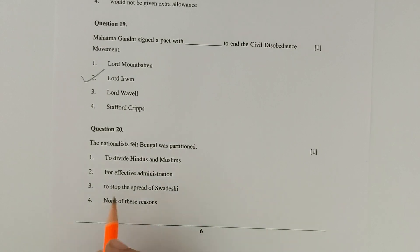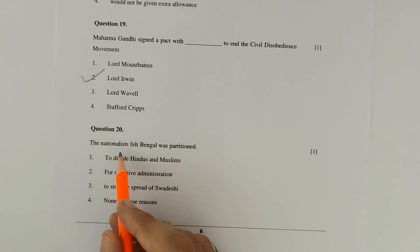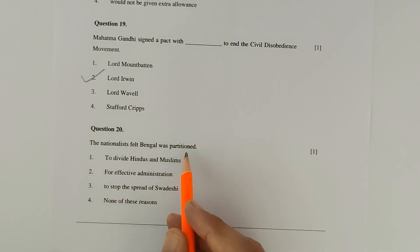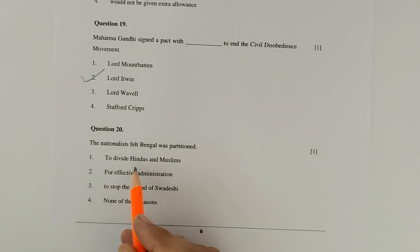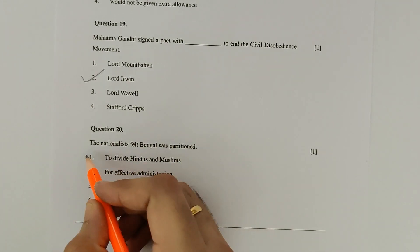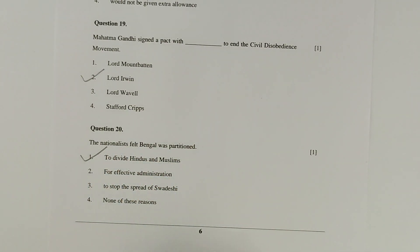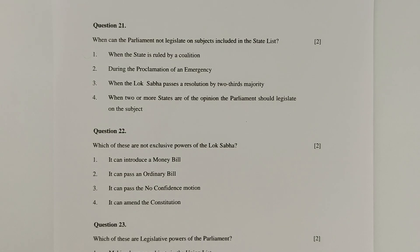Question 20: The nationalists felt Bengal was partitioned to divide Hindus and Muslims. Hence option 1 is correct.